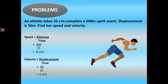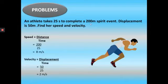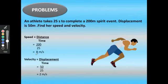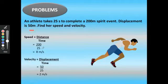An athlete takes 25 seconds to complete a 200-meter sprint event. Displacement is 50 meters. Find her speed and velocity. Speed is equal to distance divided by time: 200 divided by 25 equals 8 meter per second. Velocity is equal to displacement divided by time: 50 divided by 25 equals 2 meter per second.